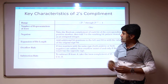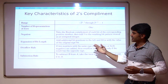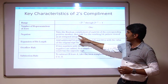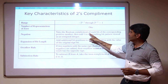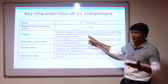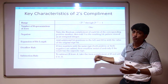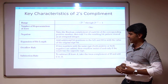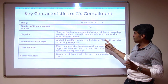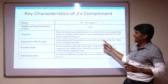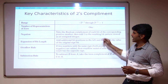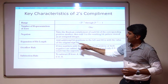The next characteristic is negation. To take the negation, you need to take the bitwise Boolean complement, then add 1 to the least significant bit. This is the negation process.